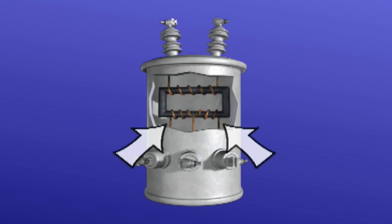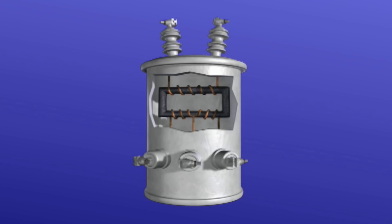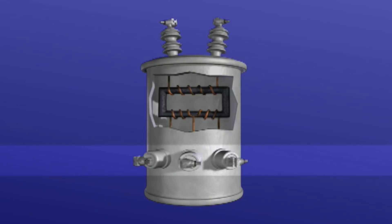The secondary winding of the transformer is rated and insulated for a specific secondary voltage. When energized, the secondary winding supplies voltage to a secondary load. Connections between the winding and the load are made through insulated secondary bushings.